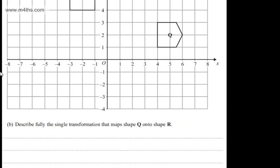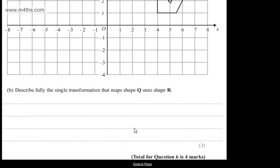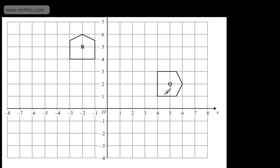In part B now, it says, describe fully the single transformation that maps shape Q onto shape R. The question carries three marks. So here's shape Q and here's shape R. This is going to be a rotation.